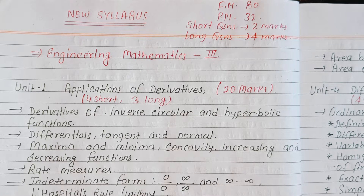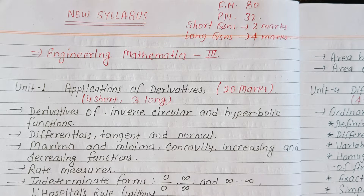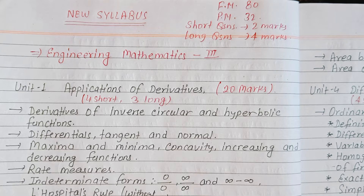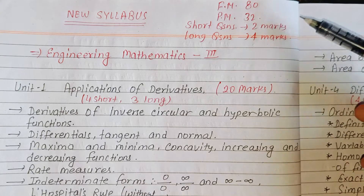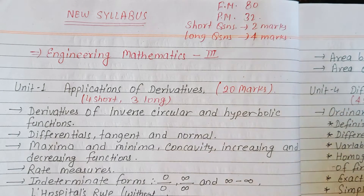Welcome back to our new video. Today I am covering Diploma in Civil Engineering 3rd semester Engineering Mathematics. The new syllabus was changed in 2018. The full marks is 80 and pass marks is 32.